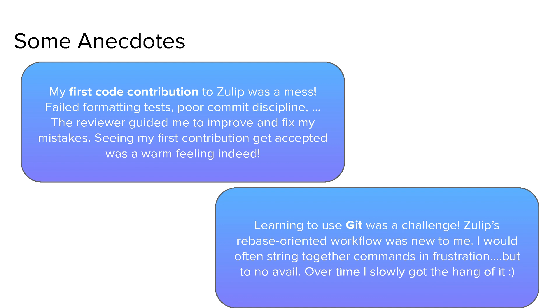Another tough challenge was when I first started to use Git. Git is the version control system Zulip uses. Zulip did things a little differently — the type of Git workflow they used was the rebase-oriented workflow. This was something I was not familiar with. I would just often string together commands I found online in frustration, and nothing would end up working. It was only after I was patient and went through documentation about what these commands actually meant that I got a better understanding of Git. Slowly over time I improved, and today I am very comfortable with Git, especially the rebase-oriented workflow.